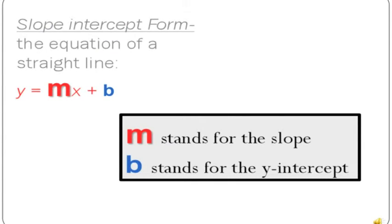Slope-intercept form is the equation of a straight line, which is y equals mx plus b. M stands for the slope, and b stands for the y-intercept.